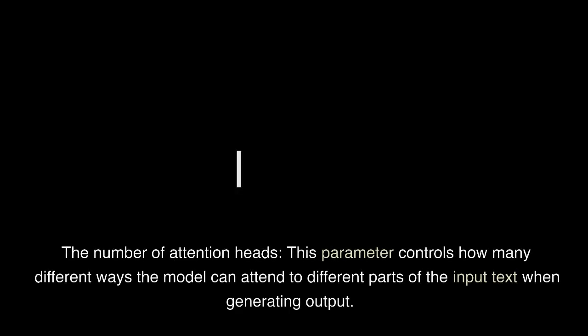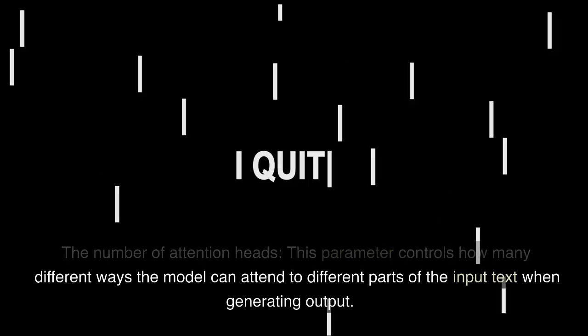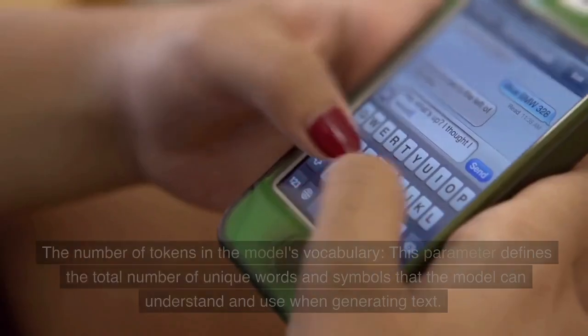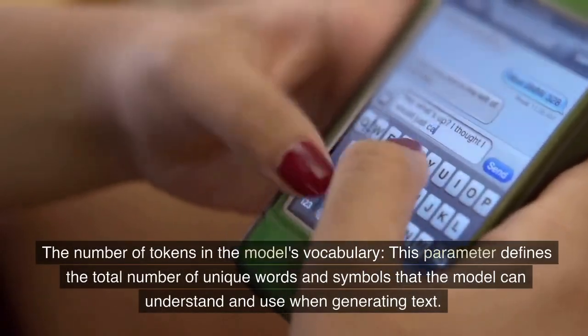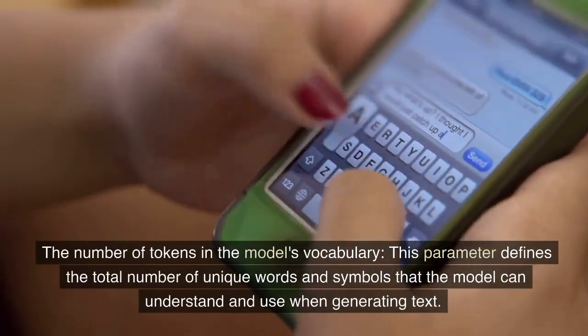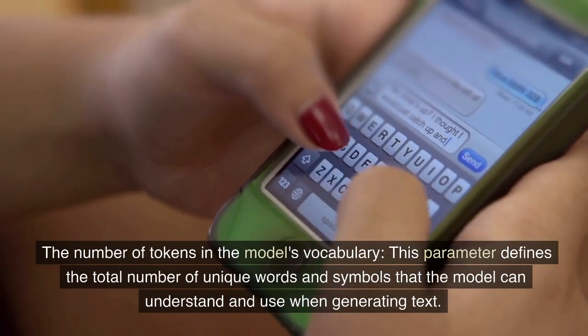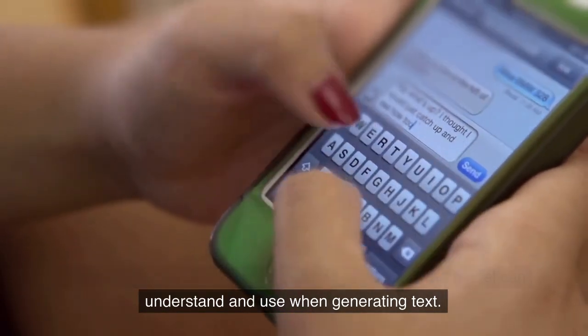The number of attention heads. This parameter controls how many different ways the model can attend to different parts of the input text when generating output. The number of tokens in the model's vocabulary: this parameter defines the total number of unique words and symbols that the model can understand and use when generating text.